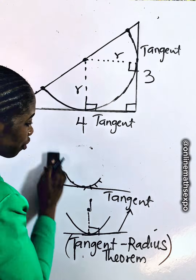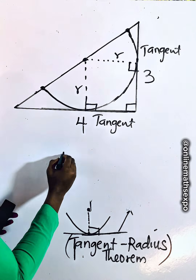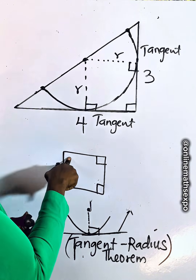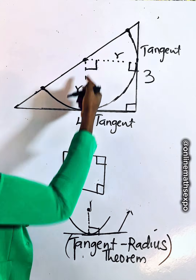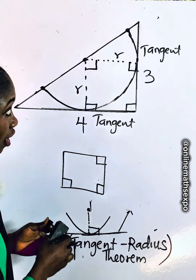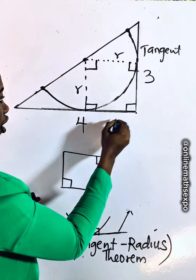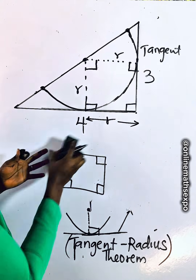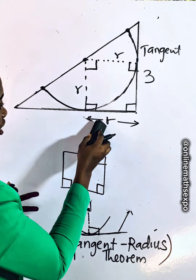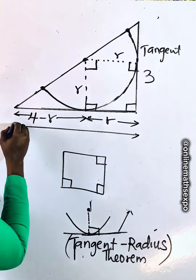Looking at this carefully, we can observe that this angle is 90 degrees. We now have a quadrilateral shape with angles of 90, 90, 90, and 90. Since this side is the radius R of the quadrilateral, the opposite side is also equal to R. So from here to here is also R. The total length of this side is 4, so if one part is R, the remaining part is 4 minus R.